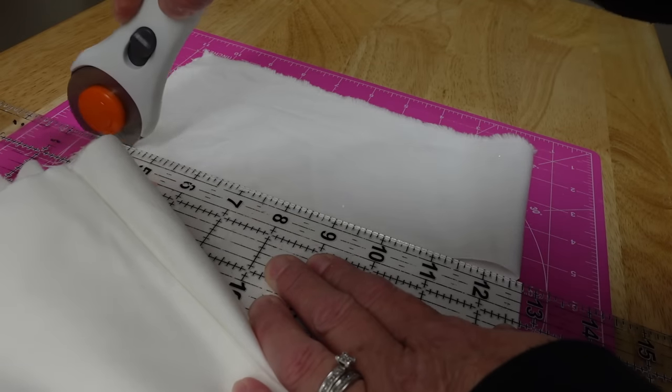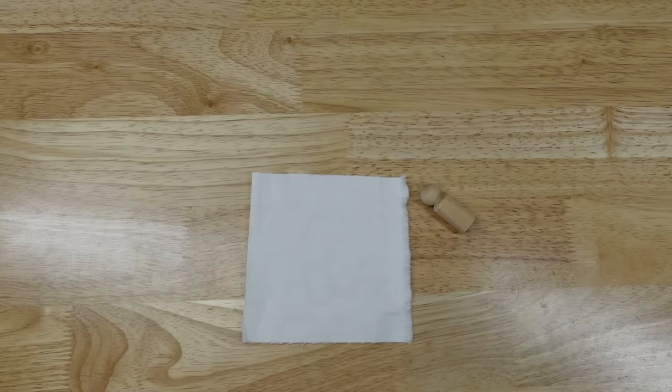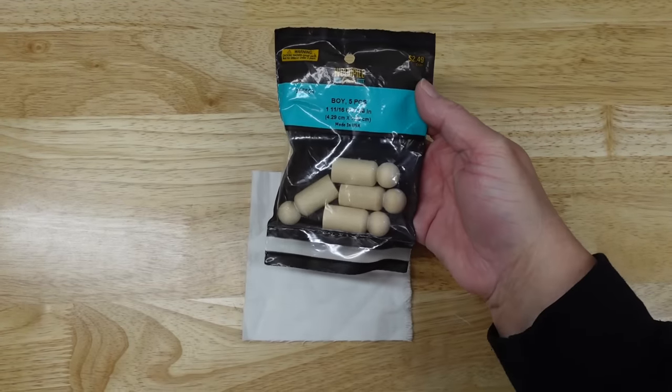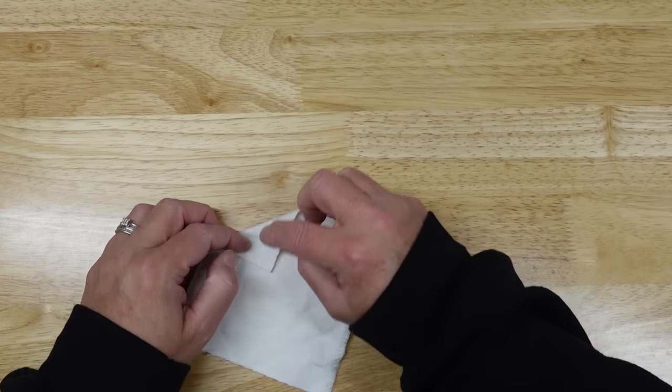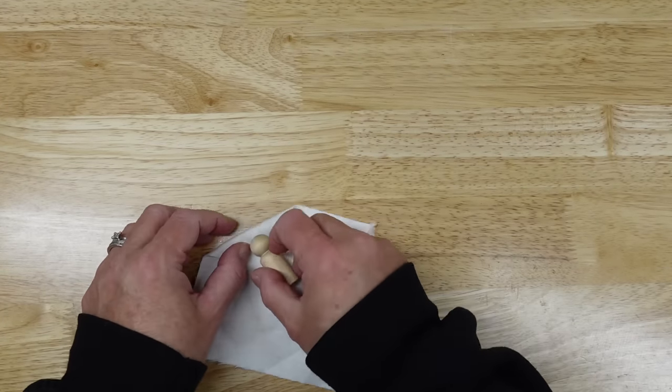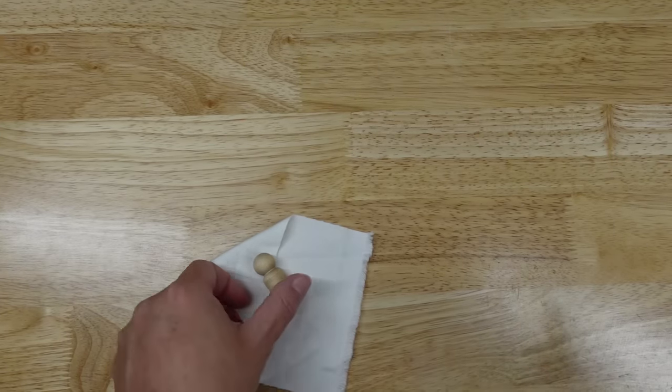For this ornament, I cut a strip of flannel and I folded it to make a square. I used one of these little wooden fellers that I got from Hobby Lobby. In case you haven't figured it out yet, this is going to be a blanket. And this little fella right here is baby Jesus.